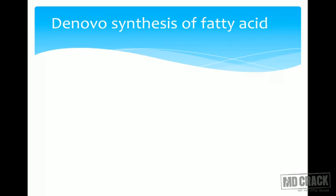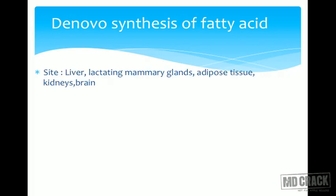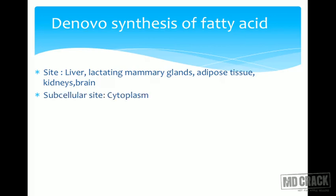Where are the fatty acids synthesized? The main site is the liver. Other sites include the lactating mammary gland, because that is where milk production takes place and fatty acids are present in milk. It also happens in adipose tissue, kidneys, and brain — because the brain has to form very long chain fatty acids (VLCFA). Within these tissues, synthesis takes place in the cytoplasm.